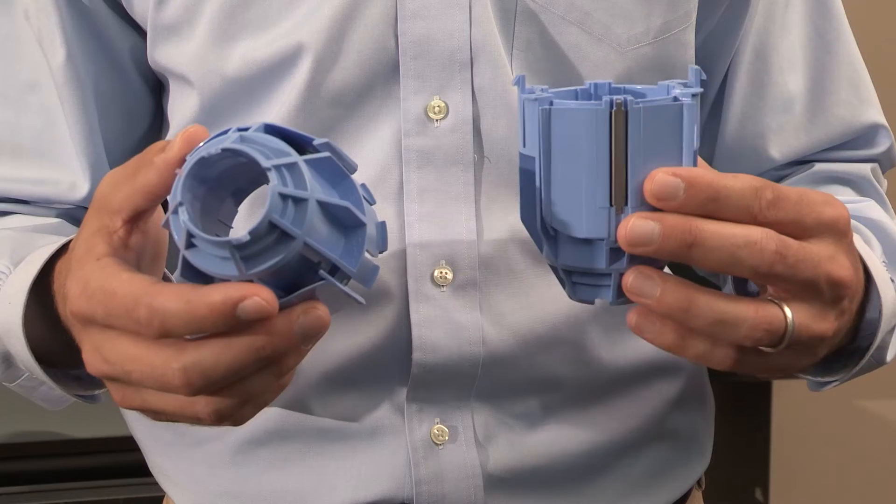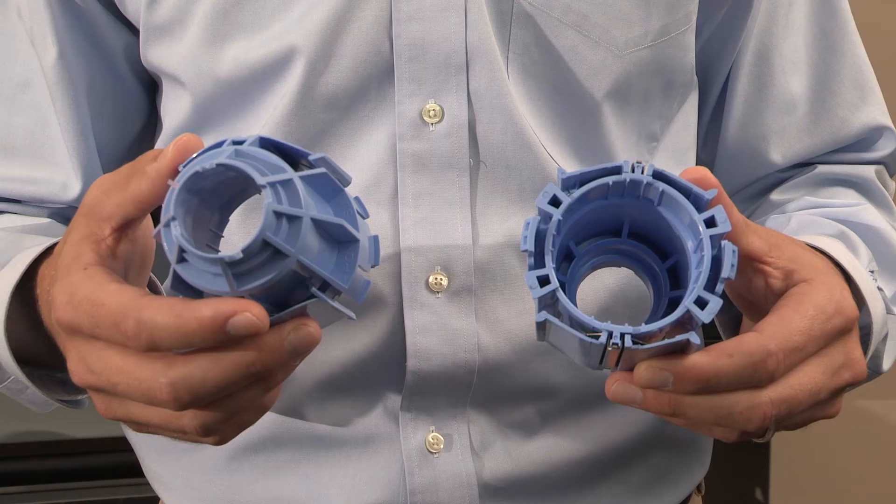With HP Designjet printers, you can load media with either core size. If you're switching from a roll of media with a 2-inch core to one with a 3-inch core, you will need to use 3-inch core adapters. Blue adapters like these should have come with your printer.